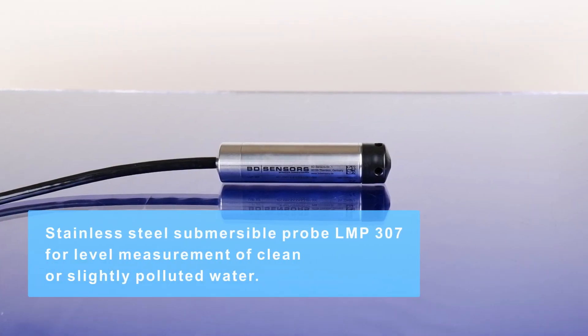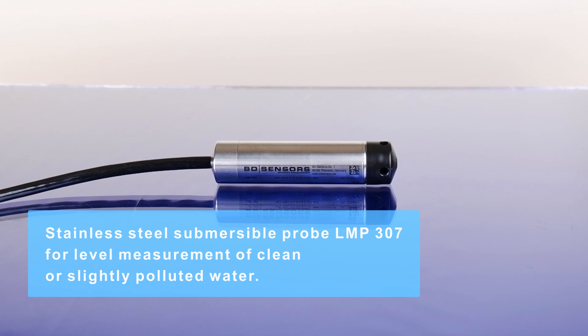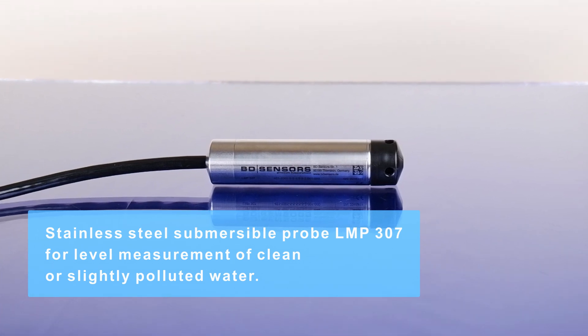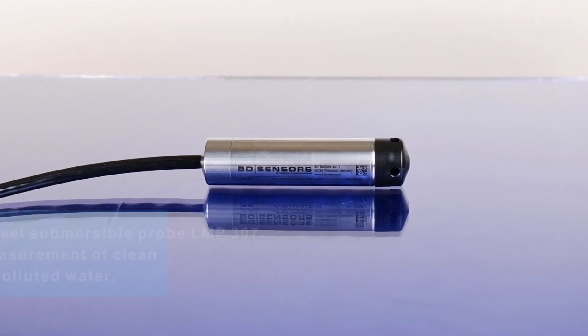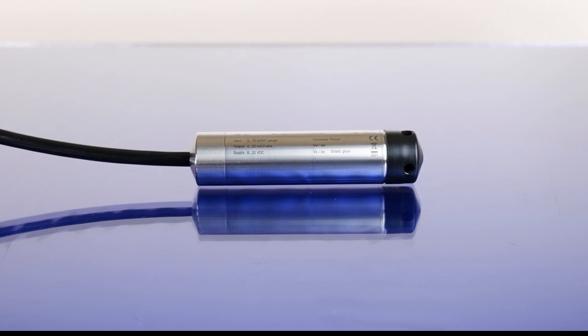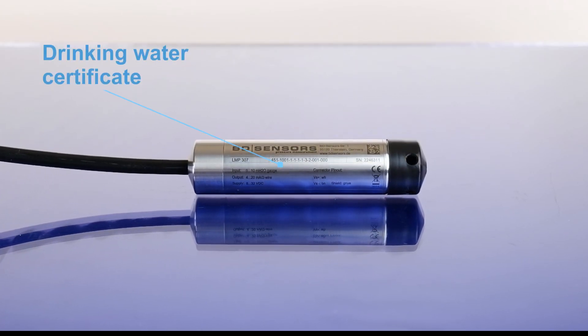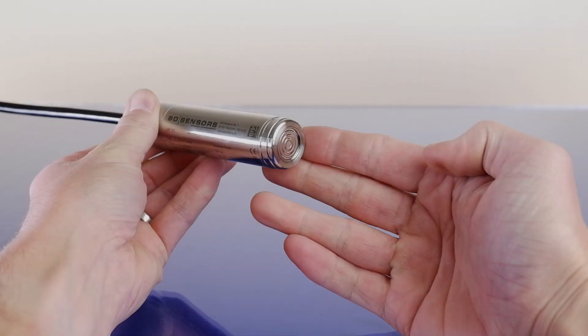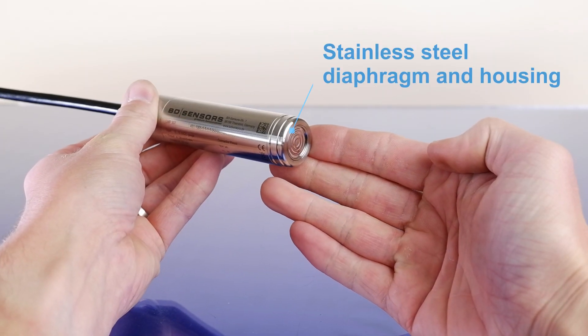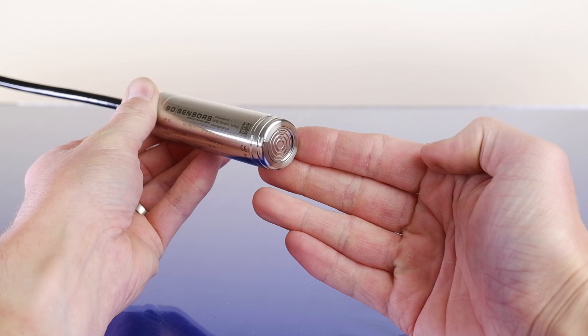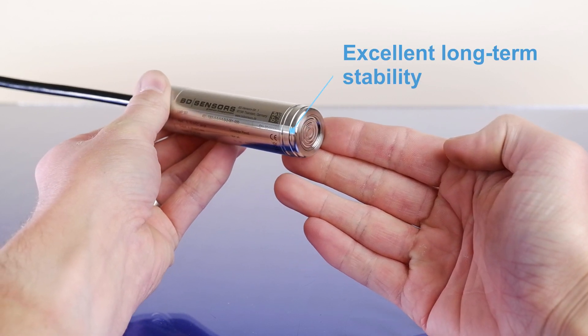Stainless Steel Submersible Probe LMP307 for level measurement of clean or slightly polluted water. Main advantages of the probe are drinking water certificate, stainless steel diaphragm and housing, and excellent long-term stability.